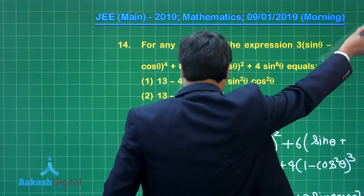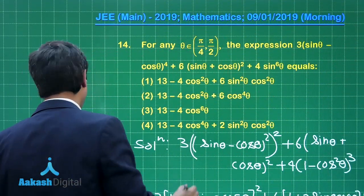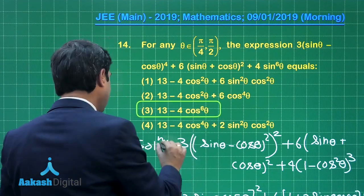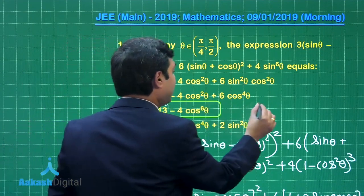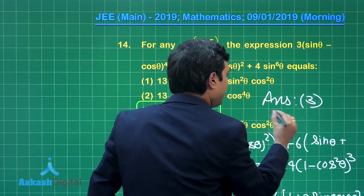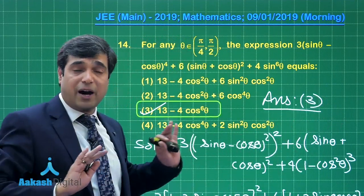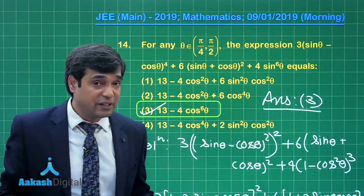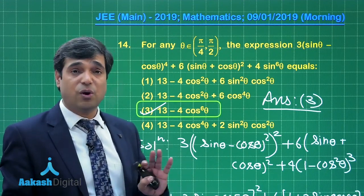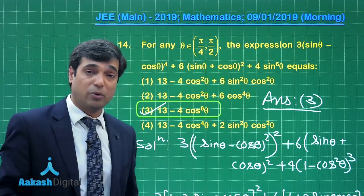So checking the given options, we have 13 minus 4 cos 6 theta, which is option number 3. Let us mark it as the correct answer. This question involved some trigonometry and simplification — conversion of sine to cosine and vice versa.